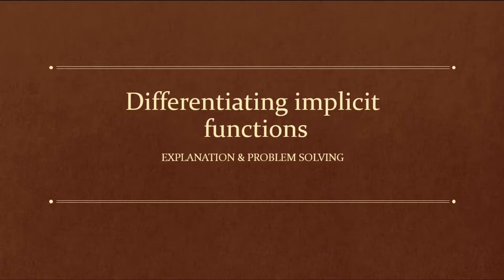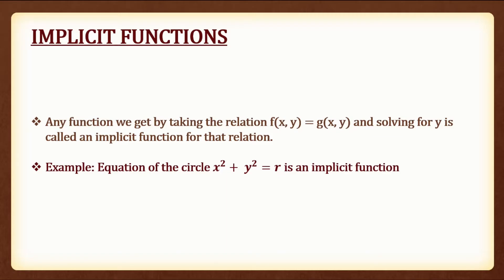The next topic is differentiating implicit functions. An implicit function is any function we get by taking the relation f of x, y is equal to g of x, y and solving for y. For example, the equation of the circle x squared plus y squared is equal to r is an implicit function.